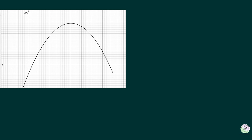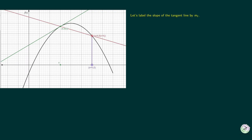Suppose we need to find the slope of the tangent line to the graph of f(x) at the point with x-coordinate x. The y-coordinate of this point is f(x), obtained by plugging x into f. We label the slope of the tangent line as mₜ. Since we only know one point on the tangent line, we cannot find its slope directly. Let's move h units to the right on the x-axis. The point above this on the graph has coordinates (x + h, f(x + h)). Consider the red secant line passing through (x, f(x)) and (x + h, f(x + h)), with slope labeled mₕ.